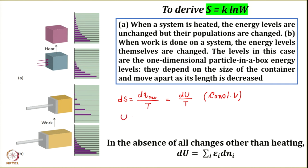If I am talking about internal energy, I am also talking about total energy, since total energy and internal energy are connected. We write: internal energy U equals U₀ plus total energy, which equals U₀ plus the summation over i of nᵢεᵢ. Whenever you want to determine the internal energy, you find the total energy and add a constant.